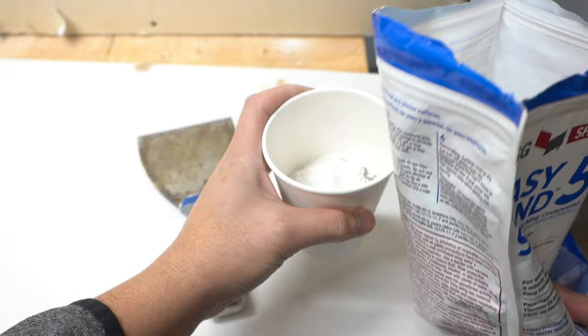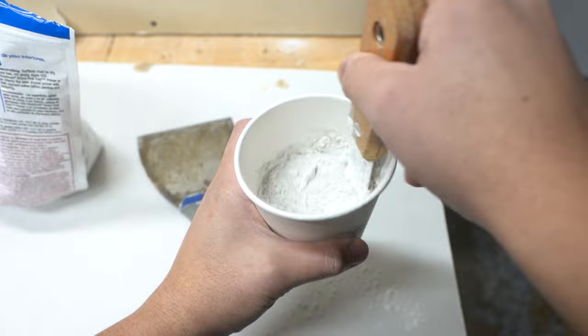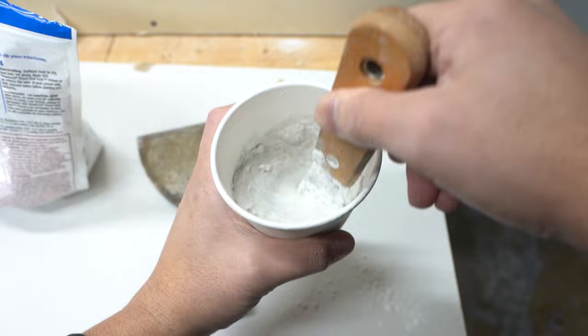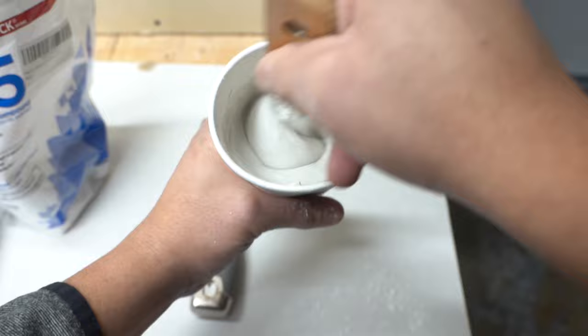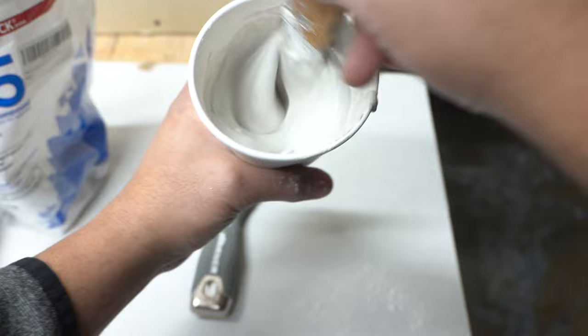If you have a drywall pan as well, you can use that. But for small works like this, I think a cup like this should be okay. Okay, so notice how you can mix this up really fast on a paper cup and easily just dispose of this once you're done. So it avoids cleanup.